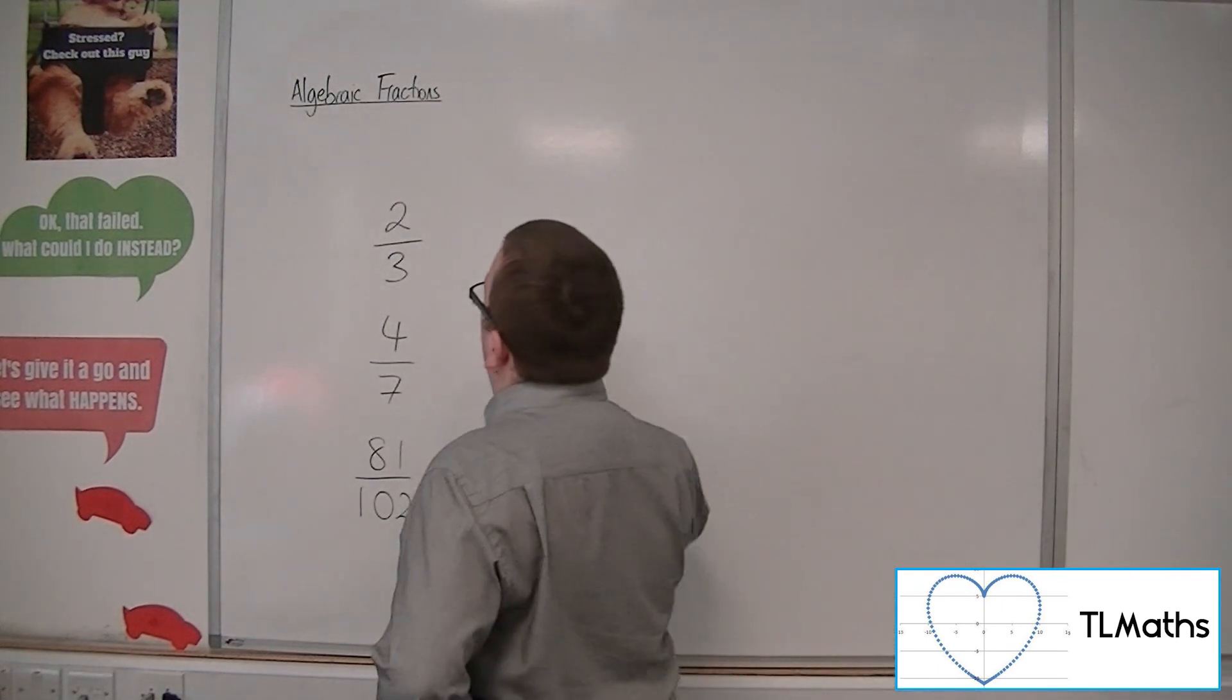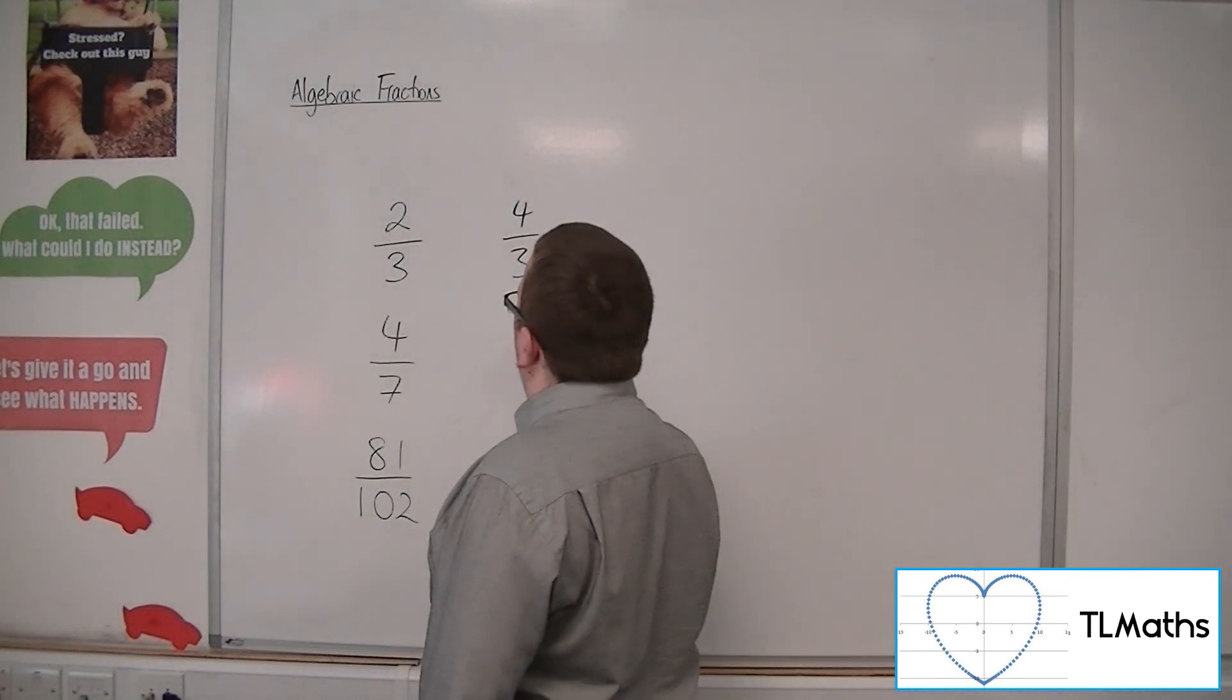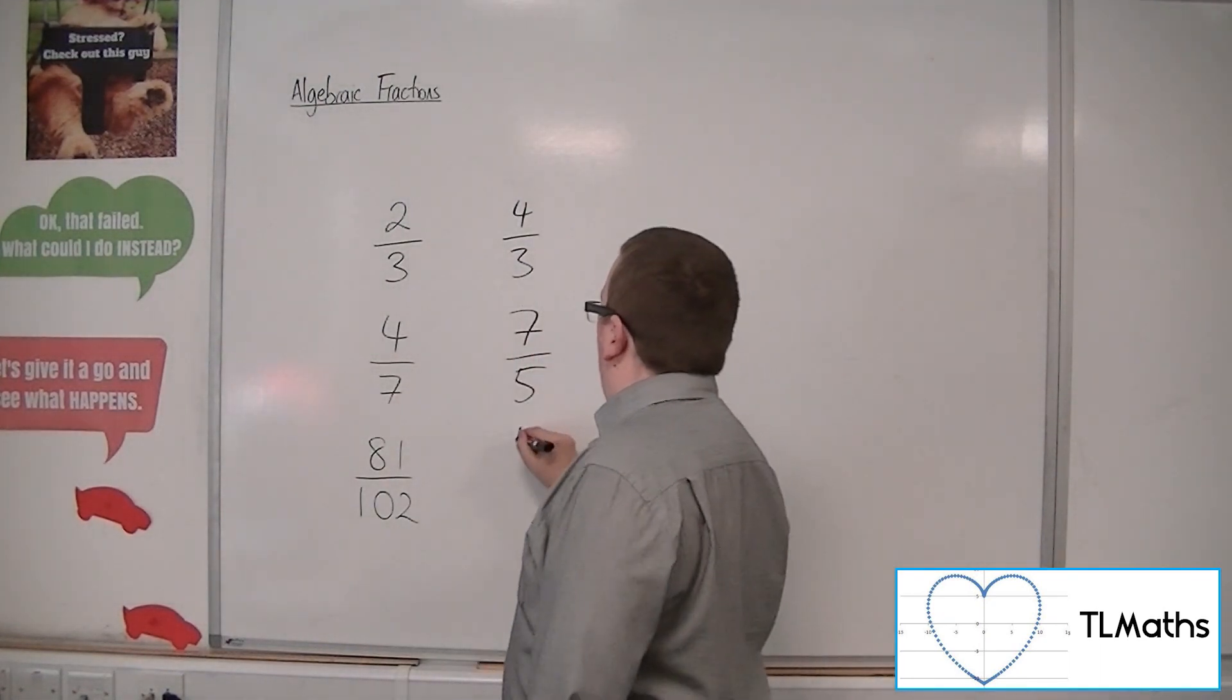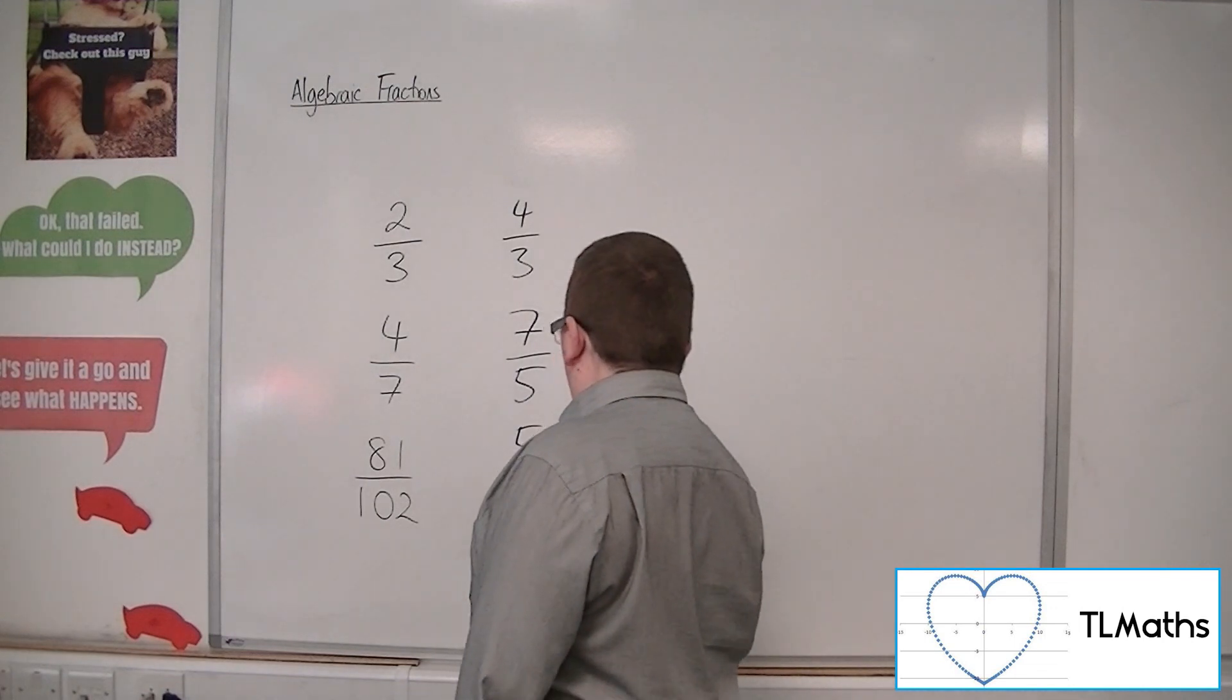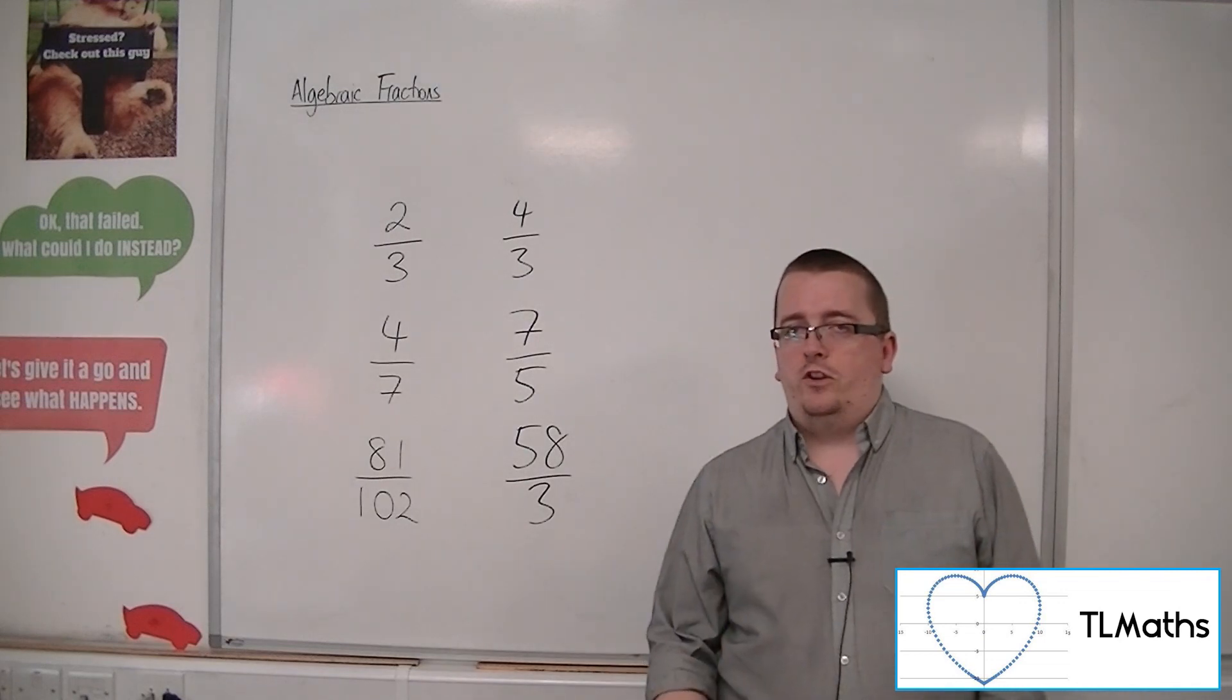An improper fraction would be something like four-thirds, seven-fifths, or 58 over 3. All of these are improper fractions.